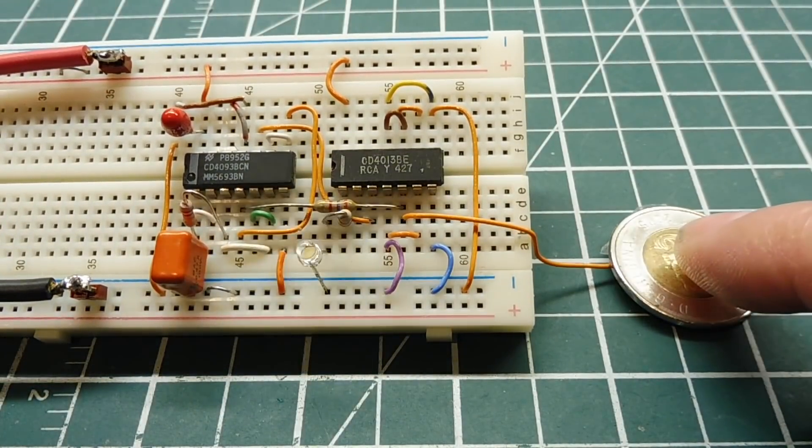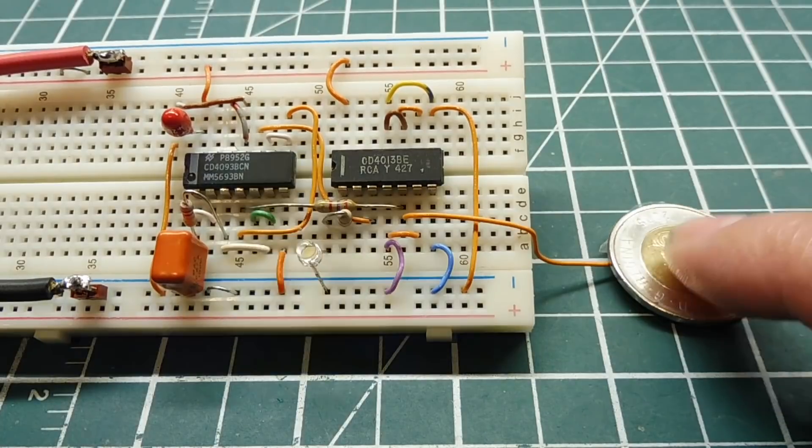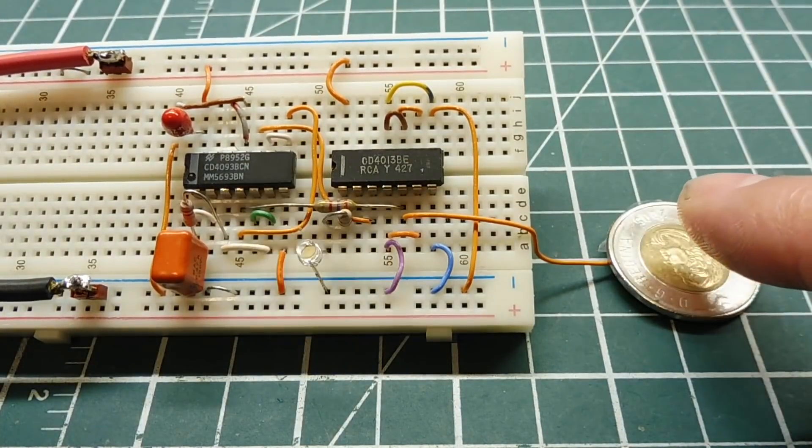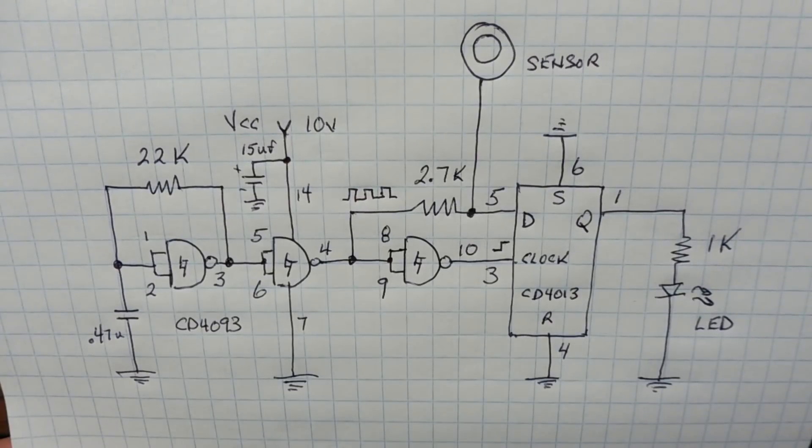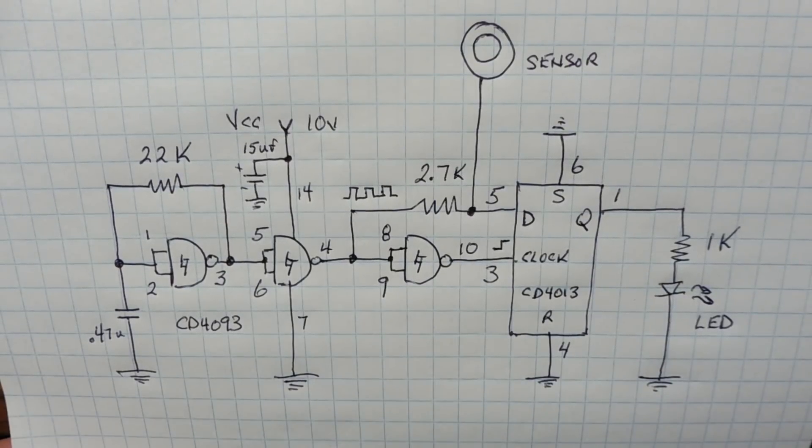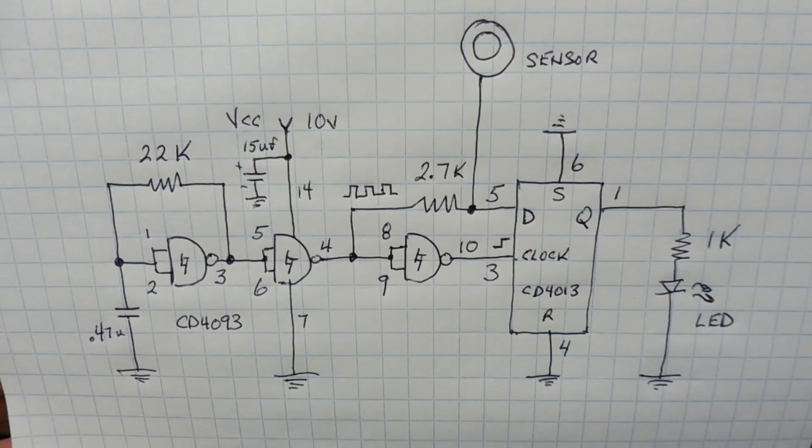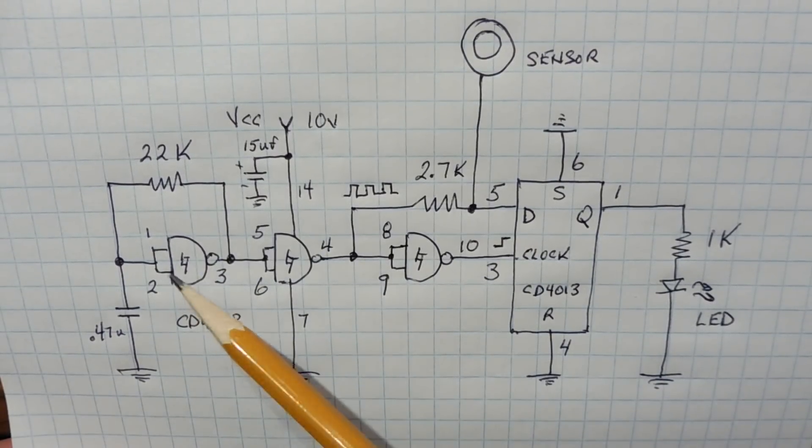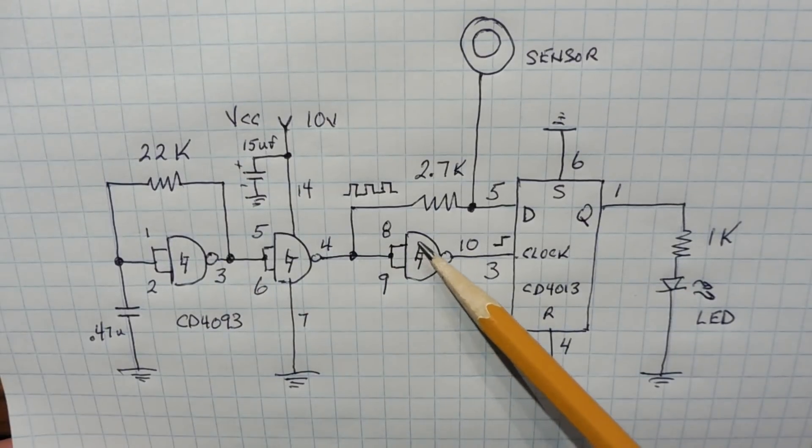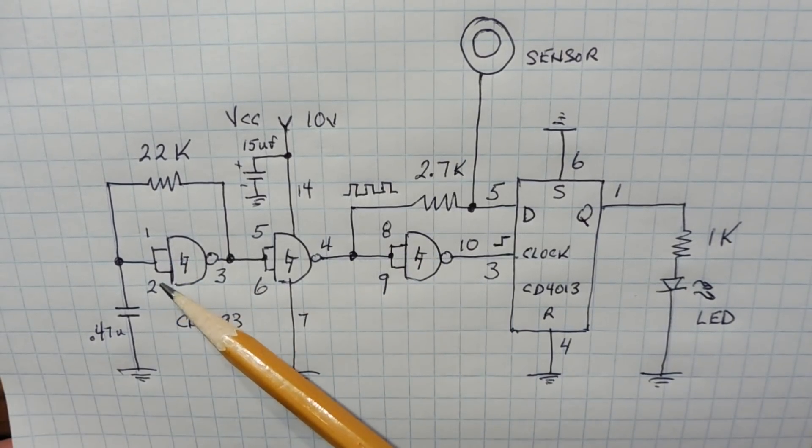Next we'll get into the schematic of this little capacitive touch switch. Here's the schematic diagram of my capacitive touch switch, and I'm using 4000 series CMOS logic, so there's no microcontroller involved, so there's no code. You can see the three NAND gates - I'm using three out of the four NAND gates, and their inputs are tied together, so they're configured as inverters.